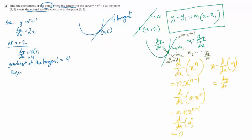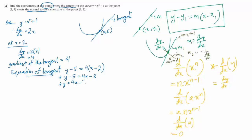The gradient of the tangent is the same as the gradient of the curve, so the gradient of the tangent is 4. Now we find the equation of the tangent line — it is the same as the equation of any line: y minus y₁, which is 5, equals 4 times (x minus x₁, which is 2). So y minus 5 equals 4x minus 8, giving us y equals 4x minus 3. This is equation 1.